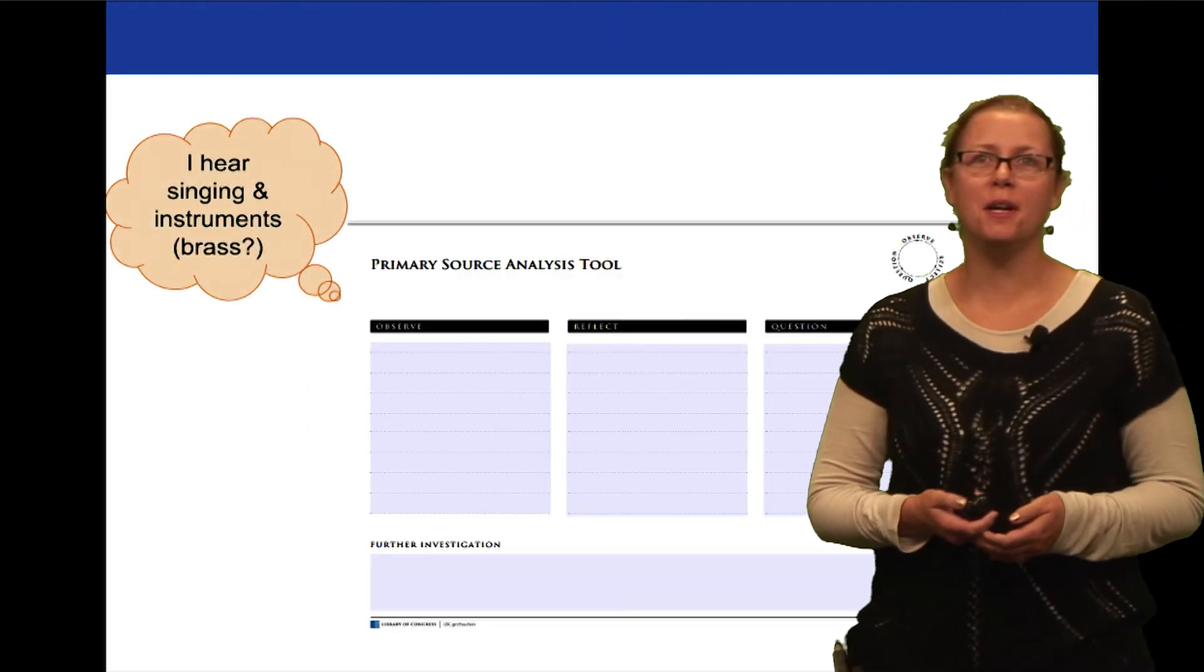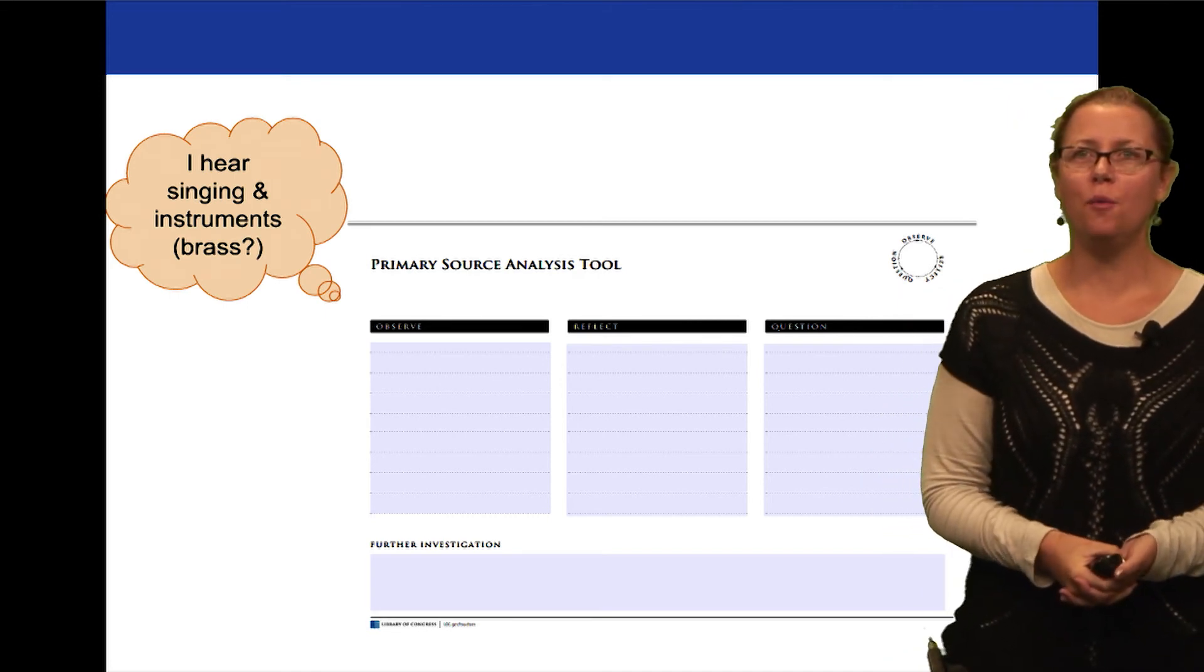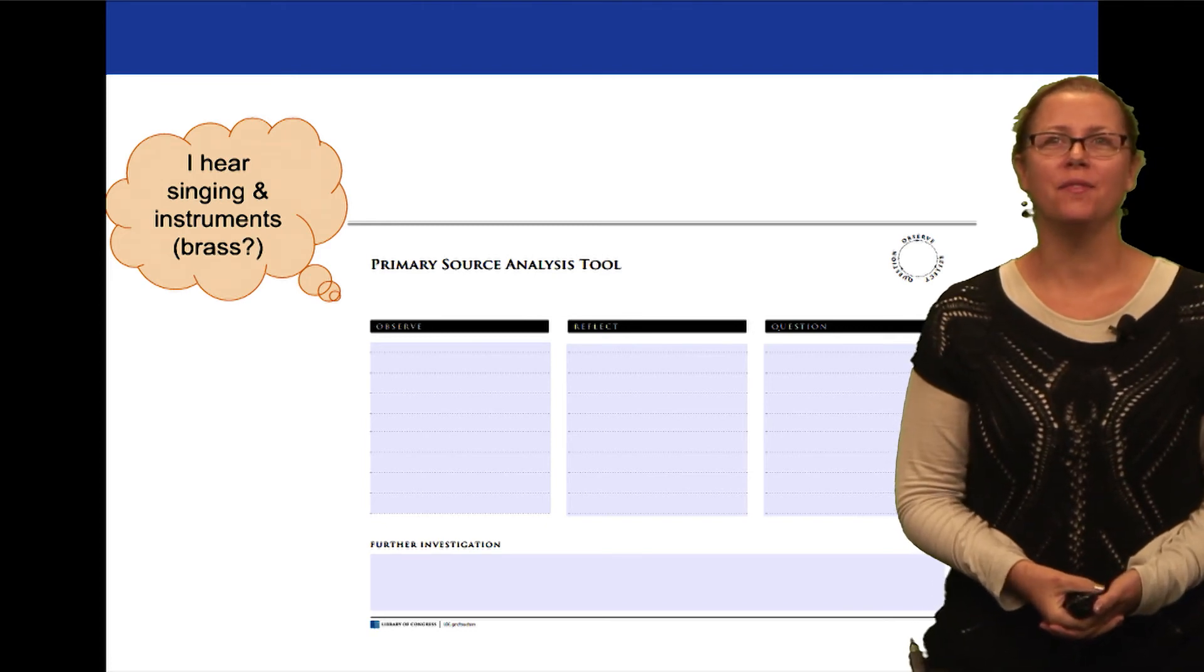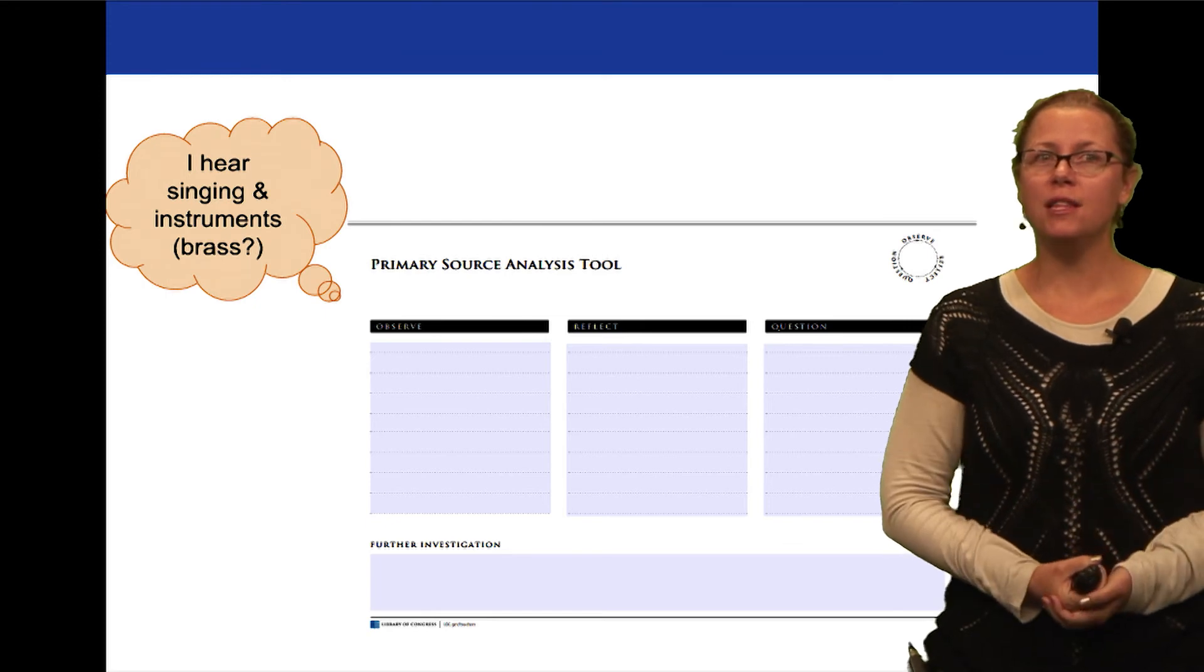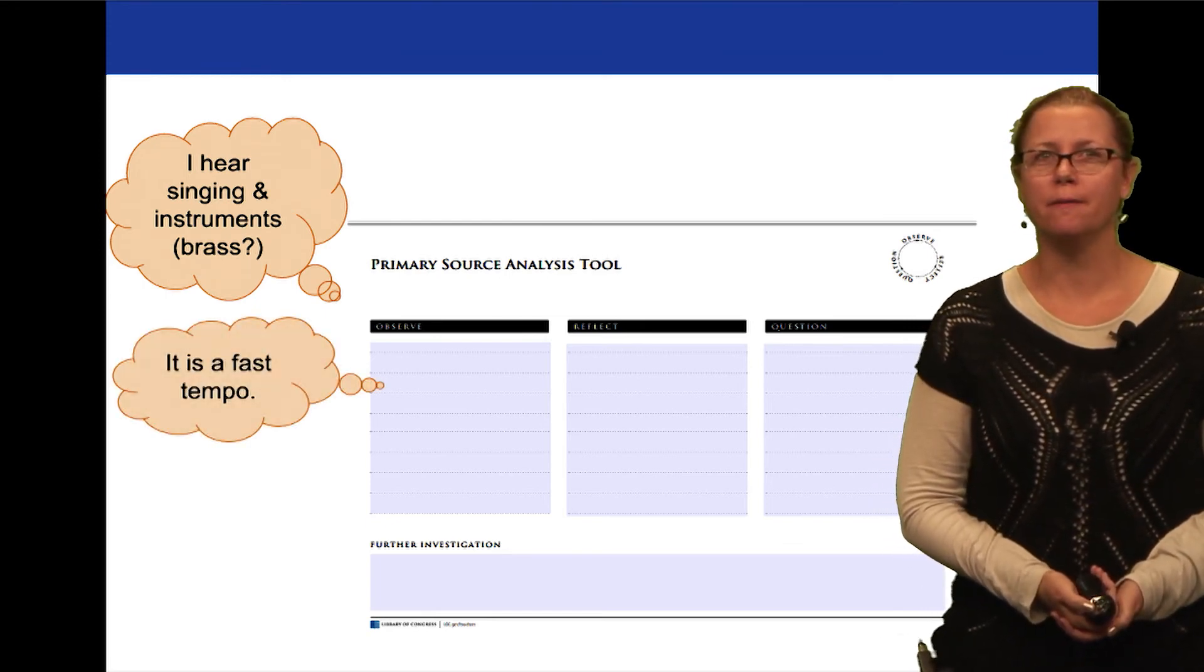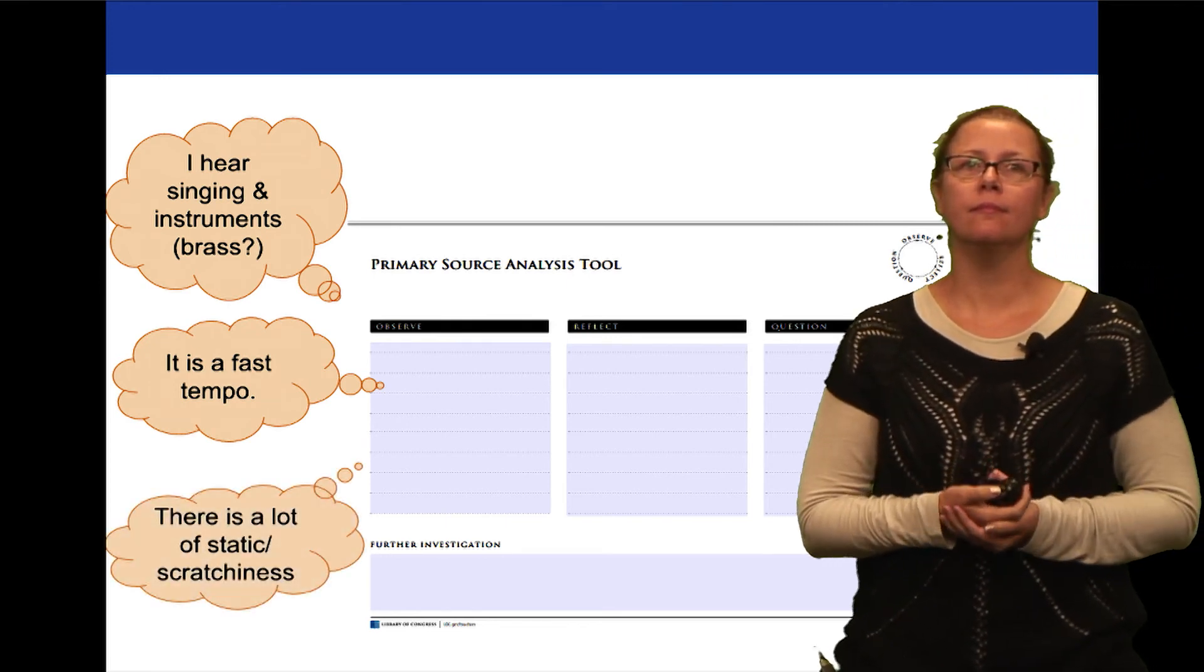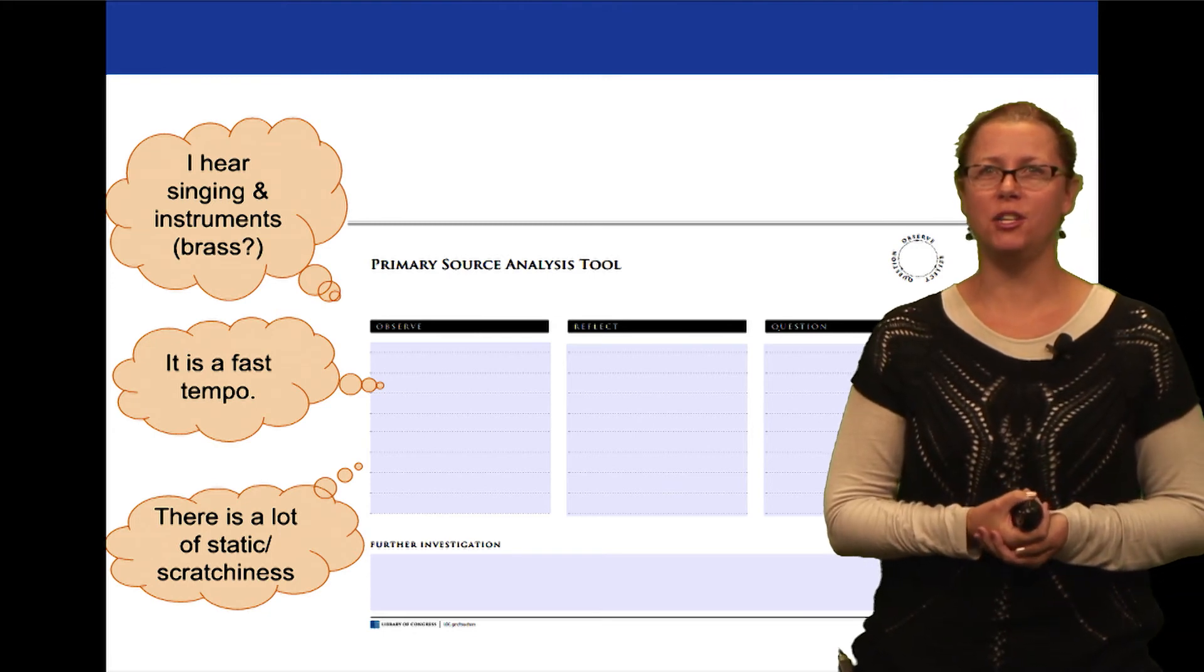We're going to go back to our primary source analysis tool and think about what did we observe as we were listening to this. What did we hear? I thought that I heard singing, but I also thought that I heard some instruments in the background, and I thought they might be brass instruments. I also noticed that it was a fast tempo, and you could also hear quite a bit of static or scratchiness in the background.